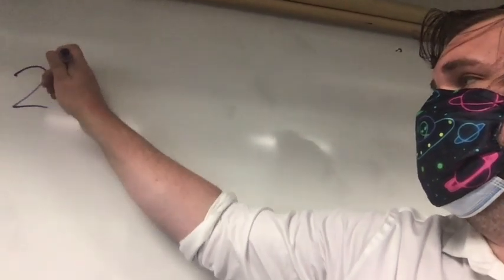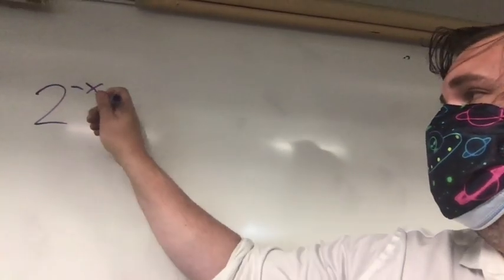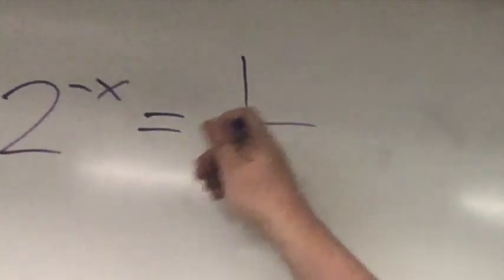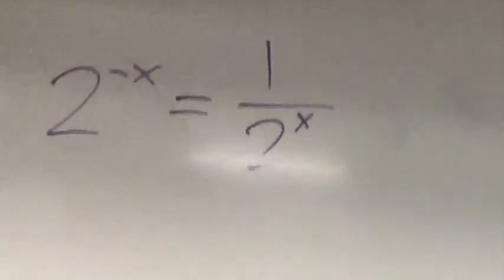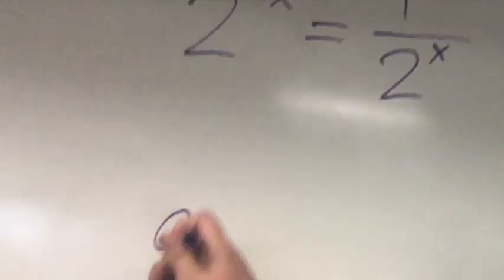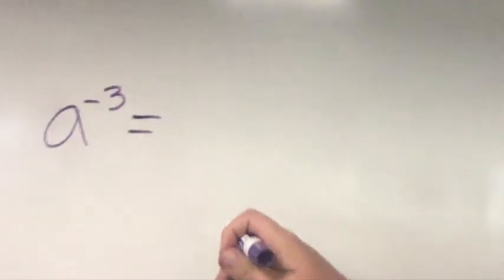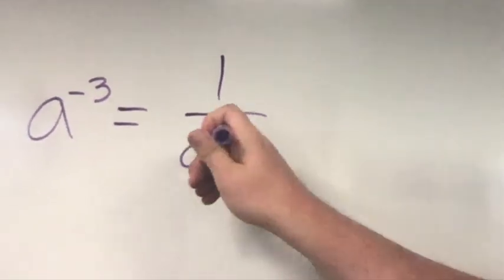2 to the negative x can be rewritten as 1 over 2 to the x. Or if you see a to the negative 3, this can be rewritten as 1 over a cubed.